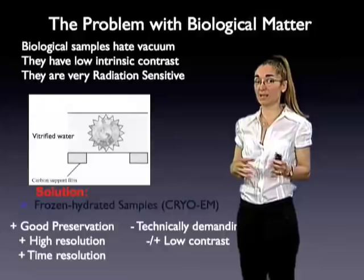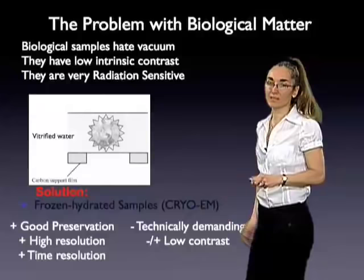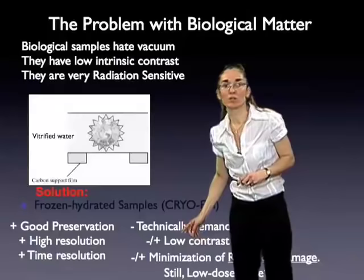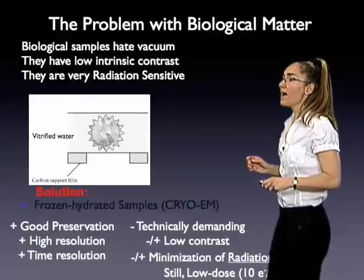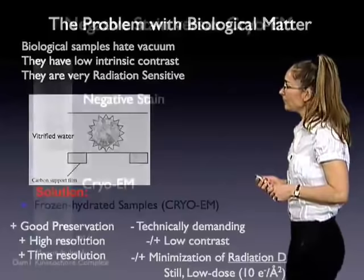The minuses are that this is a much more technically demanding technique — undergraduates in my lab rarely get to a point where they feel very comfortable doing cryo-EM; it takes many months, if not years, to really master. The other problem is contrast. There are ways of enhancing the contrast in the electron microscope, but mostly we deal with that computationally. The other problem is that although we have minimized radiation, the sample remains sensitive, so we have to use low doses — typically 10 to 20 electrons per angstrom square — and that means the images are going to be very noisy.